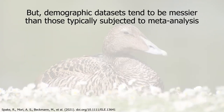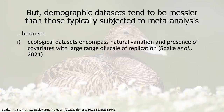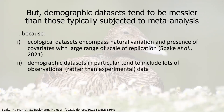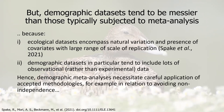Demographic datasets tend to be messier than those typically subjected to meta-analysis in other fields, for two reasons. First, ecological datasets in general tend to encompass a lot of natural variation and the presence of covariates with a large range of scale of replication. Second, demographic datasets in particular tend to include lots of observational data — people going out and counting the number of eggs or other types of offspring — rather than the sorts of experiments used to apply meta-analyses in, say, medicine. Hence demographic meta-analyses need careful application of accepted methodologies, for example in relation to avoiding non-independence as we're discussing here.